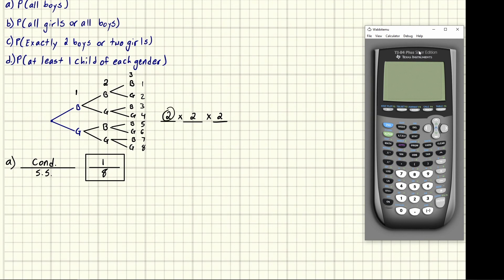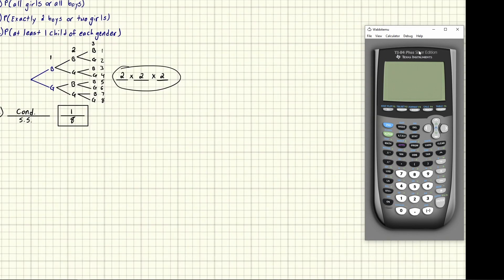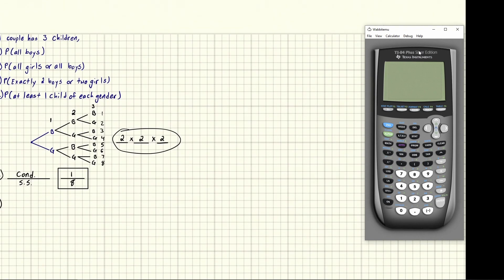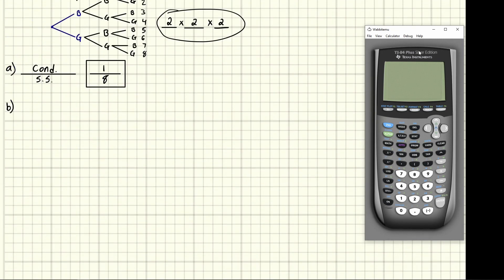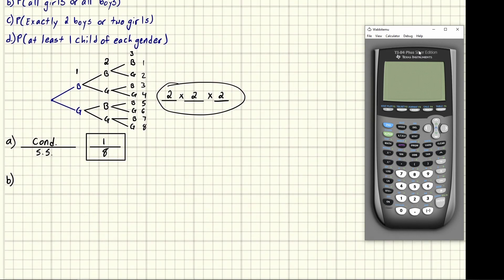The two represents the number of branches from every spot — each spot branches into two pieces, which is the same as multiplying to find the total number. That's part a. For part b — all girls or all boys — the all-boys route is boy-boy-boy, and the all-girls route is girl-girl-girl. All others have a mix, so that's two possible routes out of eight: two-eighths.